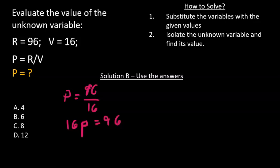So we can just take one of the answers and replace it with P, and then check whether it equals 96. So answer A, 16 times 4 equals, that's 24 plus 40, that's 64. That's incorrect.